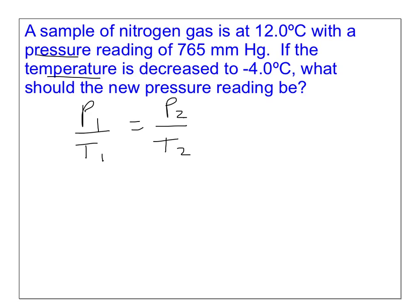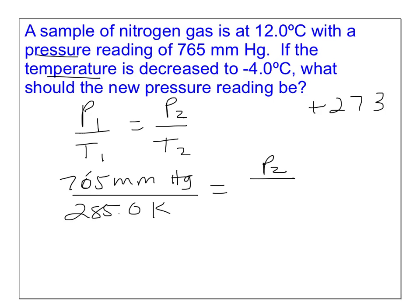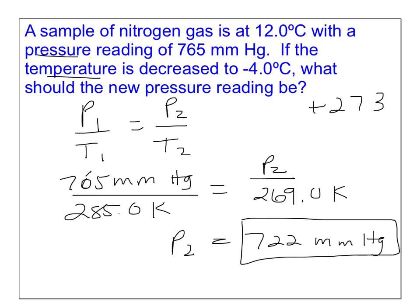Remember, our temperatures need to be in Kelvin, and we can do that by adding 273. So the pressure initially is 765 millimeters of mercury, and that's at a temperature of 12 degrees Celsius, but in Kelvin, that's 285.0. We want to calculate the new pressure if we change the temperature to negative 4 degrees Celsius, which is 269.0 Kelvin. Sig fig-wise, we have 3 sig figs. That's the lowest number of sig figs, and so I'll round my answer to 3 sig figs. 722 millimeters of mercury. This should make sense, because we decreased the temperature, so the pressure should decrease in turn.